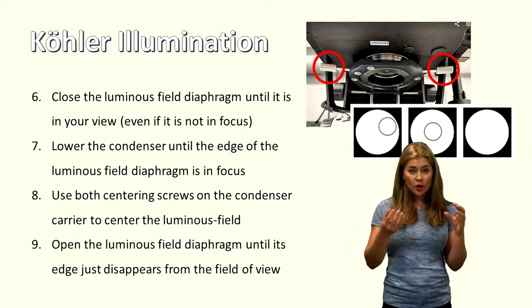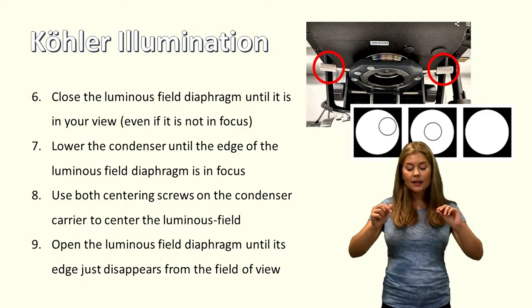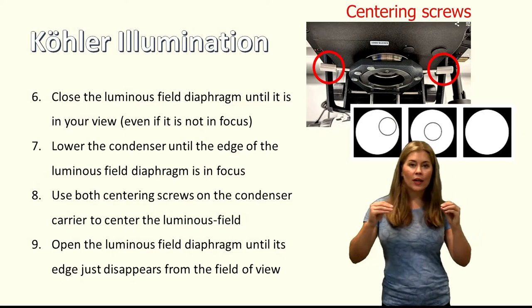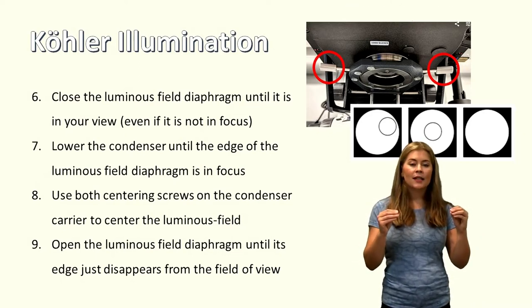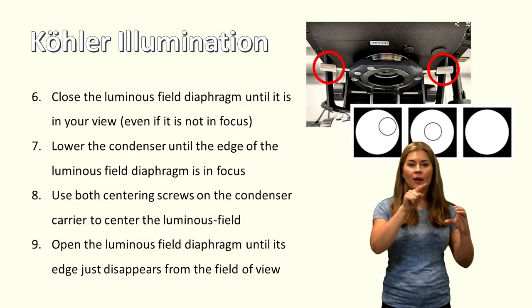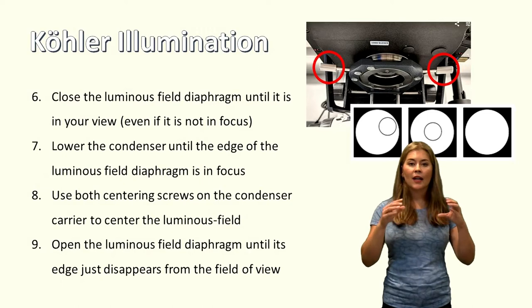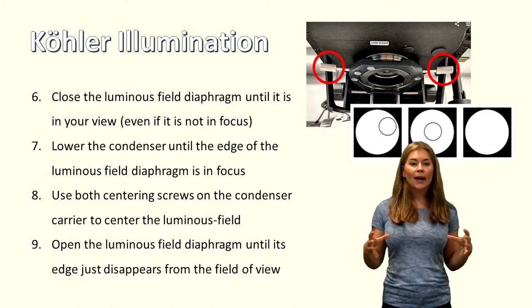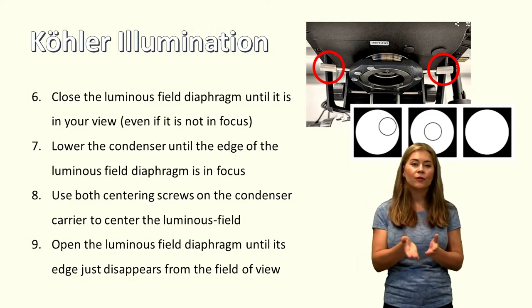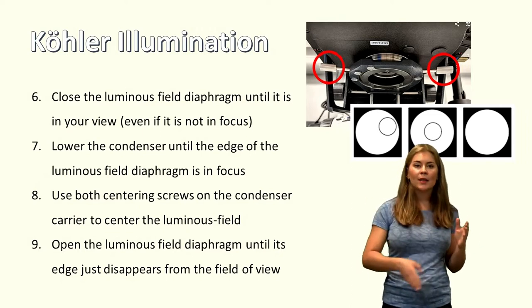Underneath the stage where your condenser sits, there's some centering screws. So if you turn them left or right either side, what you're going to do is move the condenser around. So you're going to adjust that condenser until the edges of the luminous field diaphragm that you've set are in the center. Then you're going to open back up the luminous field diaphragm so the edges are just beyond your field of view. So you've got that nice white plane again.